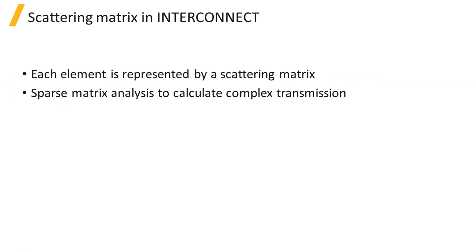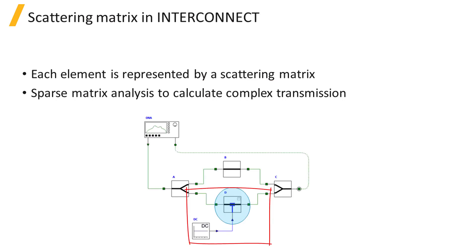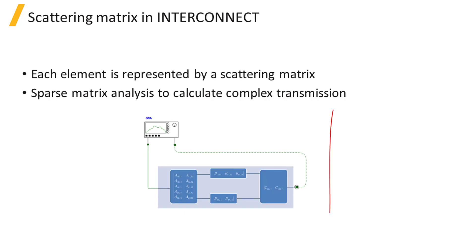This analysis requires that the scattering matrix of each element in the circuit be known. For optoelectronic devices, like electro-optic modulators, this poses a challenge as the scattering matrix depends on the driving voltage. For this reason, Interconnect performs a preliminary step during which the steady-state scattering matrix for each element is calculated and reported back to the ONA.